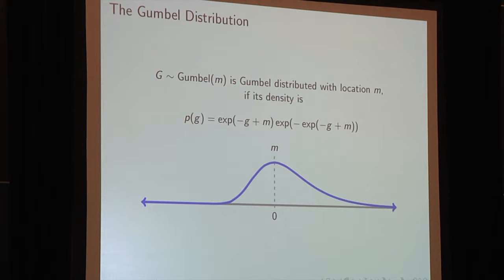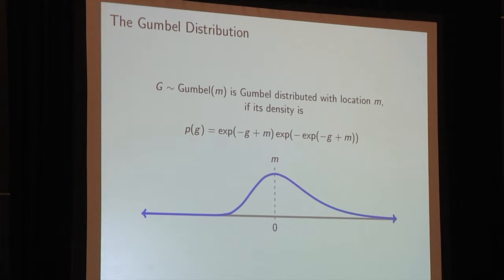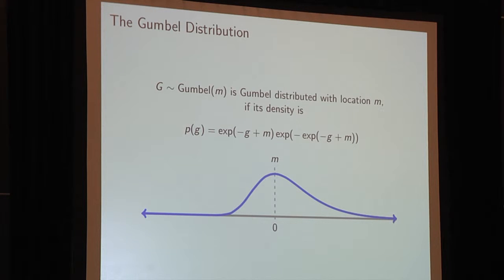The real star of this work is the Gumbel distribution. Because it's maybe not the first distribution you learn about, I'm going to step back and explain it — it's crucial to the entirety of the work. G, a random variable, is said to be Gumbel distributed with location M if its density is the following expression. This is also known as the double exponential. The Gumbel distribution has a lot of really cool properties, and I'm going to outline two of them that form the foundation of this work.